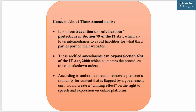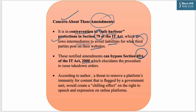There are key concerns about these amendments. First, they contravene safe harbor protections under Section 79 of the IT Act, which allows intermediaries to avoid liability for what third parties post. Under the new amendment, intermediaries are held liable. Second, the modified amendments can bypass Section 69 of the IT Act 2000, which elucidates the procedure to issue takedown orders. Additionally, the threat of removing a platform's immunity for content flagged by a government unit creates a chilling effect on the right to speech and expression under Article 19.